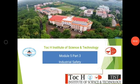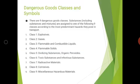Dear students, we'll continue with module 5 — this is the third part of module 5. In this session we'll see the classification of dangerous goods and the different symbols used to represent these dangerous goods.